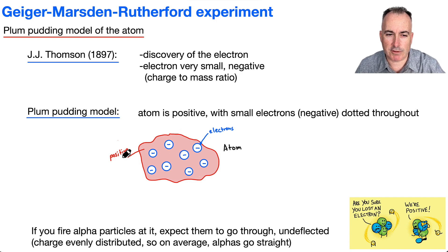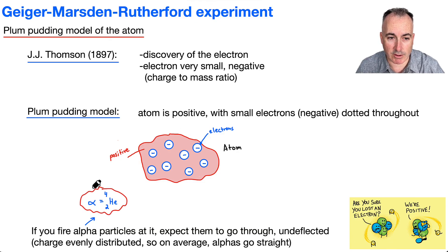Now if you fire alpha particles at it—what's an alpha particle? We have to learn that. Alpha, the Greek symbol α, is actually an atom of helium, specifically helium-4. Remember, helium is the second element. This you should memorize—it's important. You need to know alpha particle, beta minus, beta plus, and gamma.